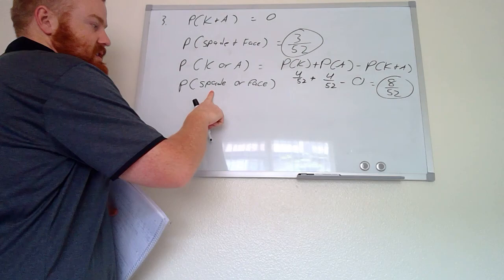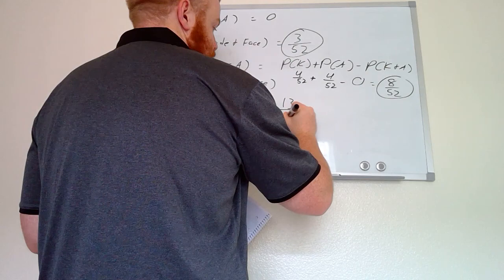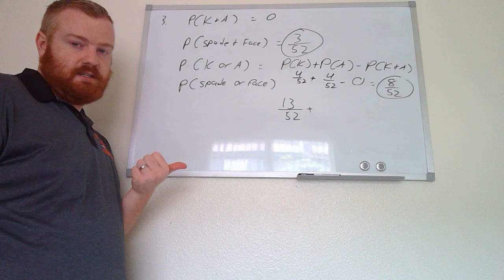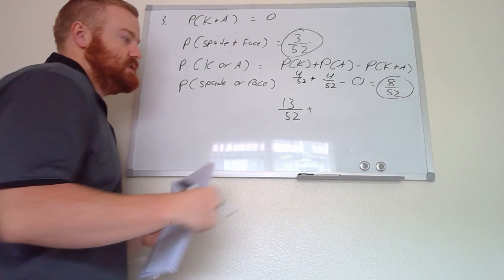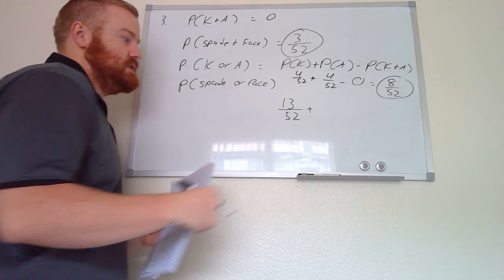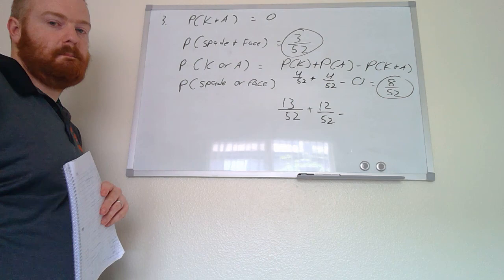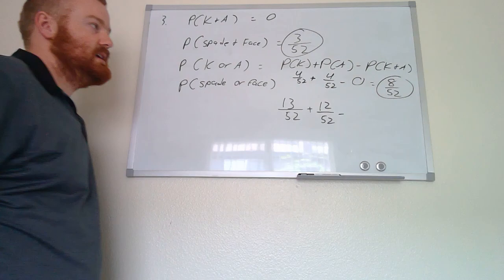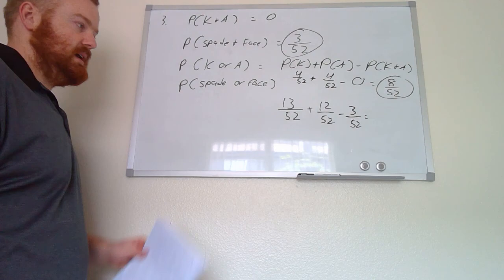For a spade or a face card, we do the same approach: probability of a spade is 13/52, plus the probability of a face card — jack, queen, or king across four suits gives 3 times 4 equals 12, so 12/52 — minus the probability that both happen at the same time, which we found in the second part: 3/52. Combining these: 13 plus 12 gives 25, minus 3 gives 22. So the probability is 22/52.